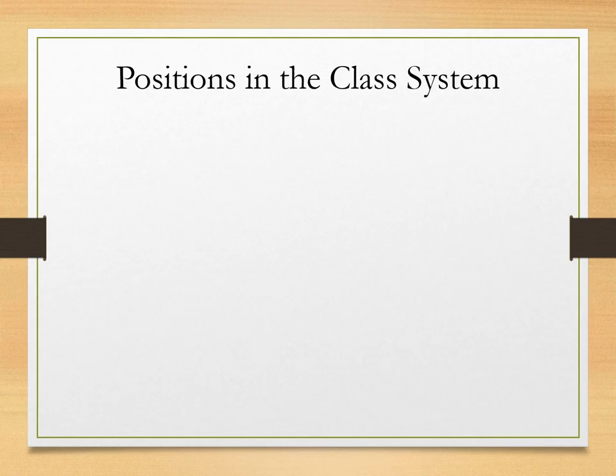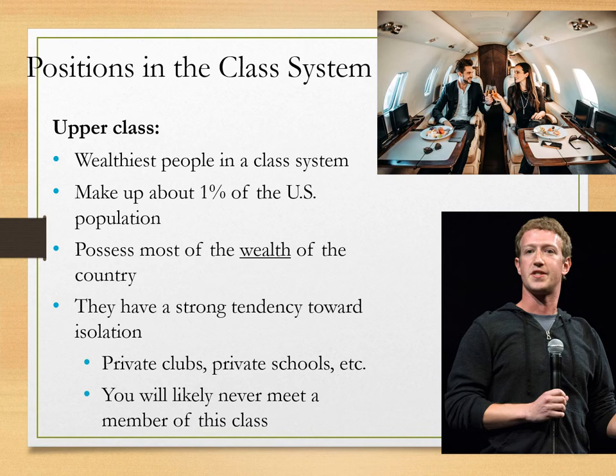The upper class are the wealthiest people in our class system — often referred to as the 1% of the US population. They possess most of the wealth in the country, meaning most of the things that actually make money. The money they have is overwhelmingly wealth rather than income. They have a strong tendency toward social isolation, preferring private clubs and private schools over public facilities. You will probably never meet a member of the 1% because they tend to isolate themselves and travel by private jet.